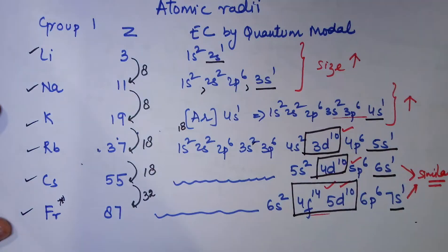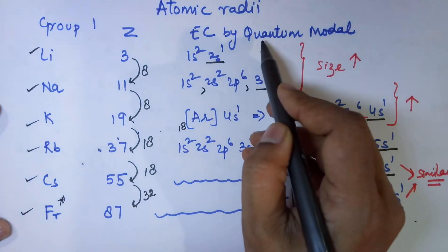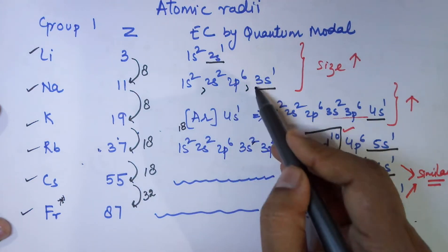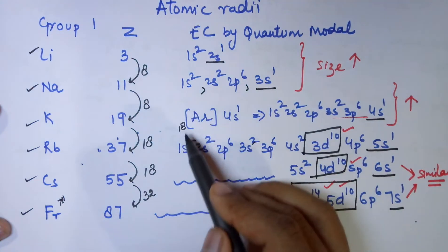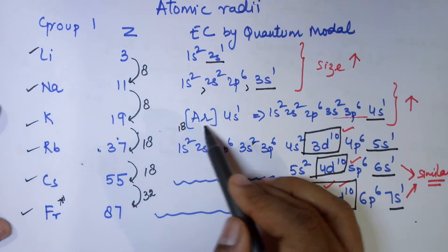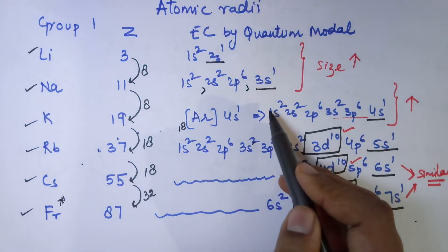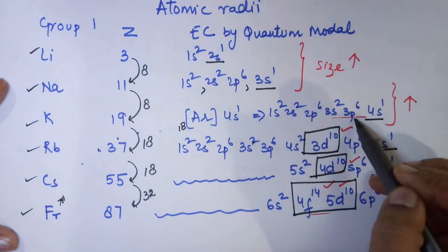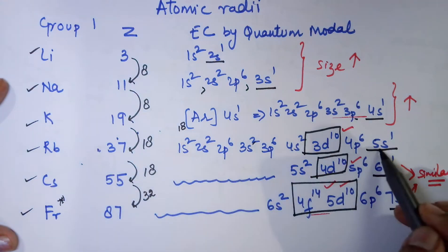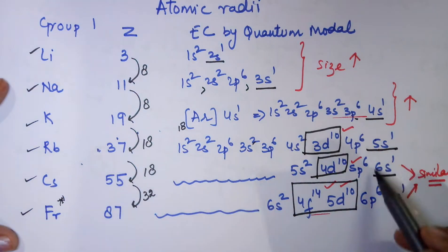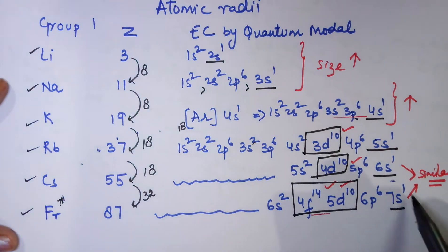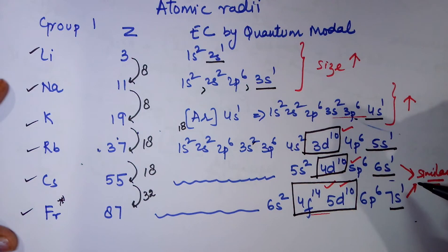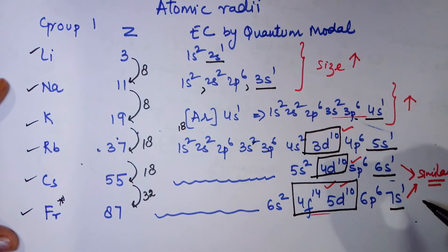Writing the electronic configuration of the elements according to the quantum model: lithium is 1s2, 2s1, and sodium is 1s2, 2s2, 2p6, 3s1. Since all of them are ending at the S subshell, they are in the S block and have 1 electron in the S subshell, so they belong to Group 1.